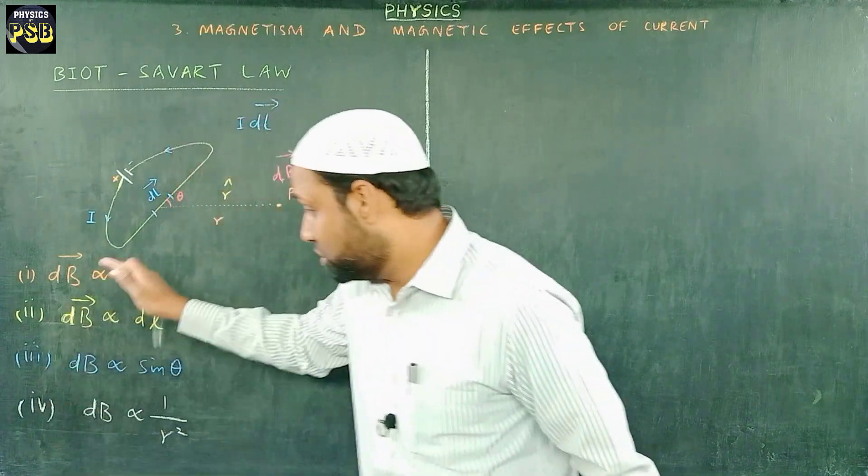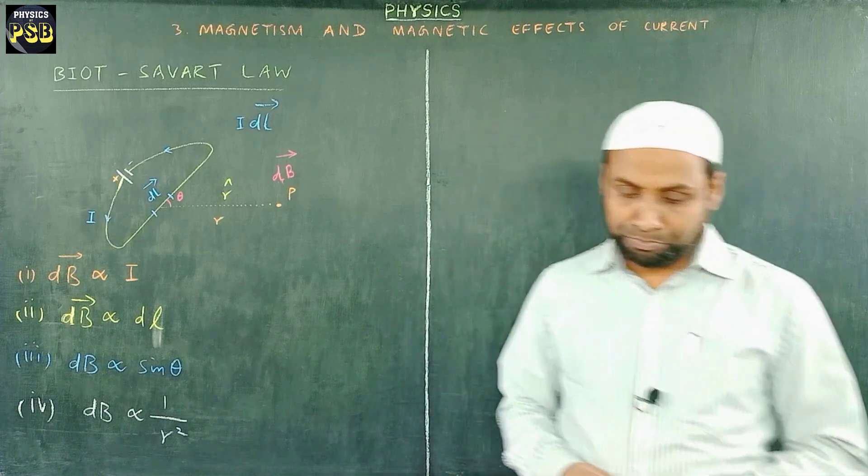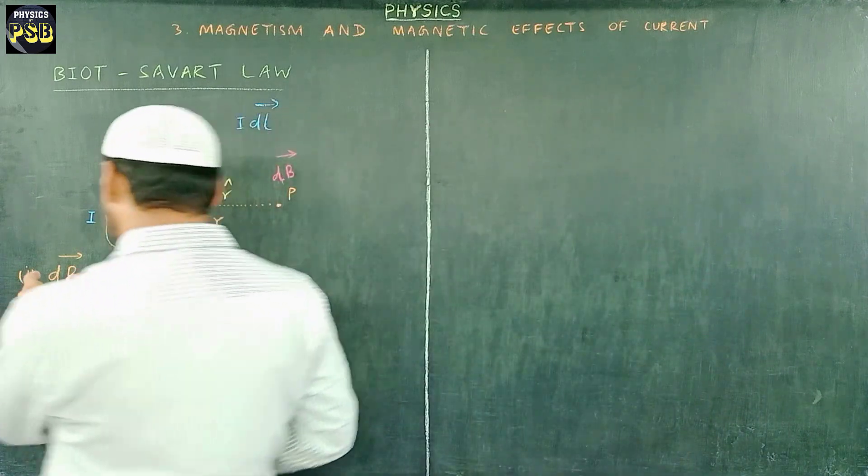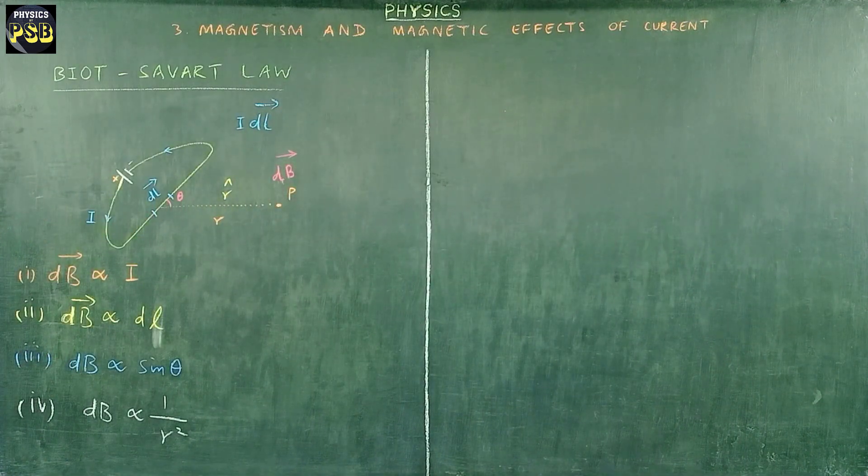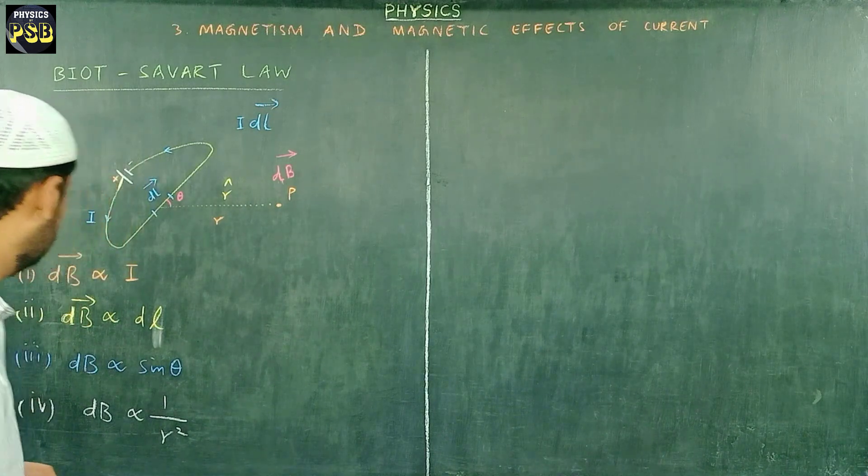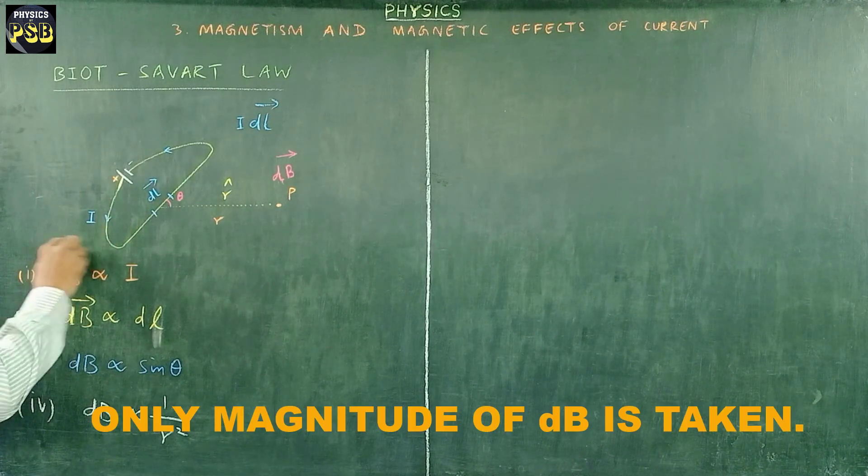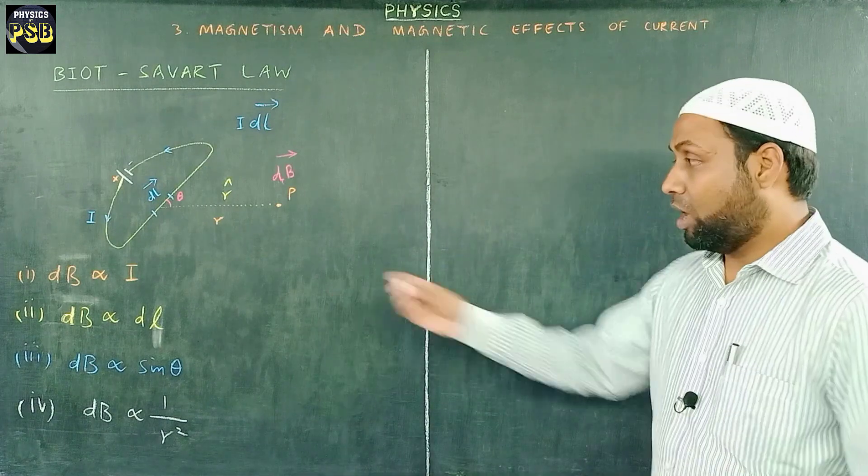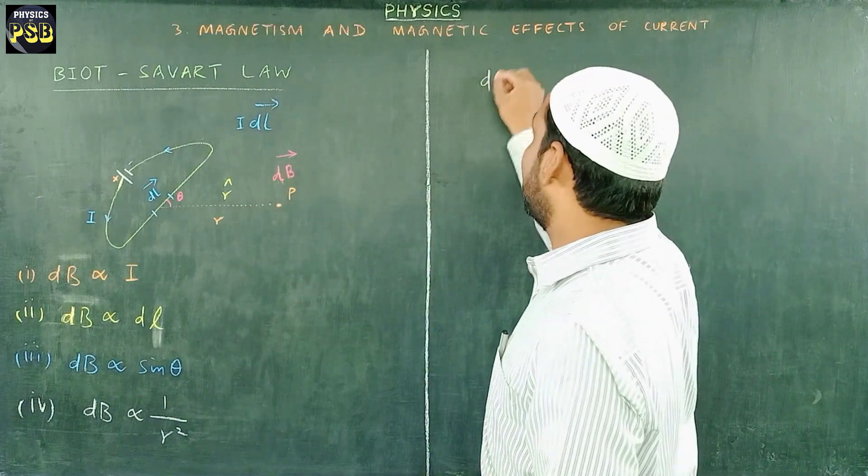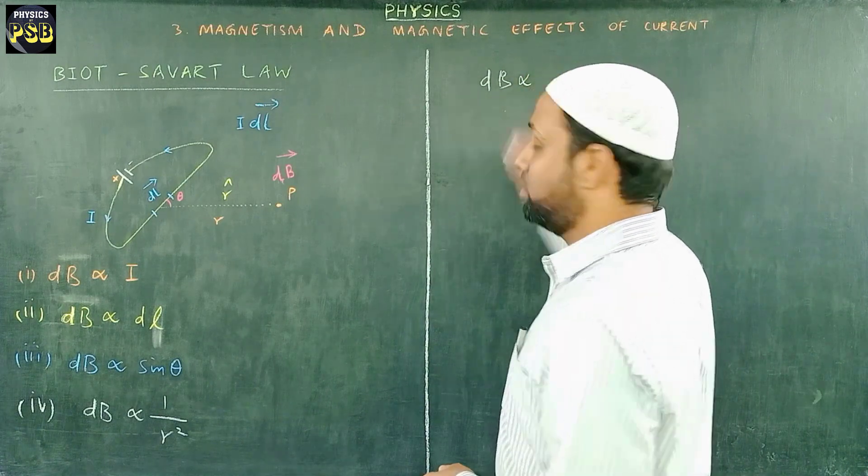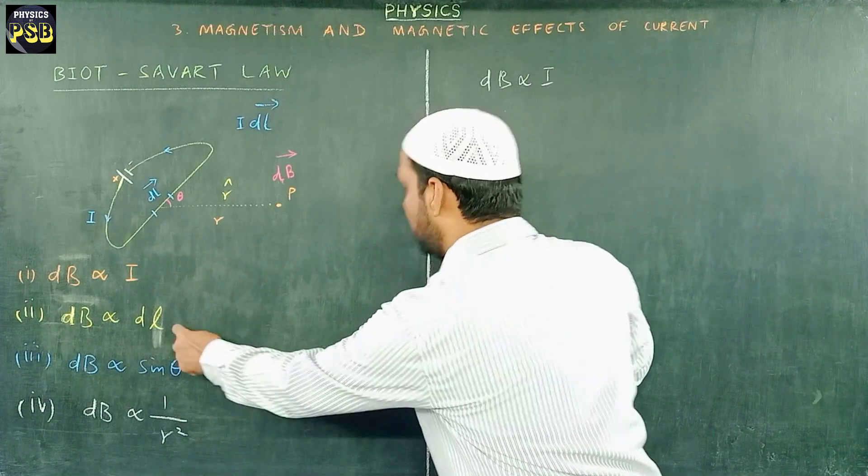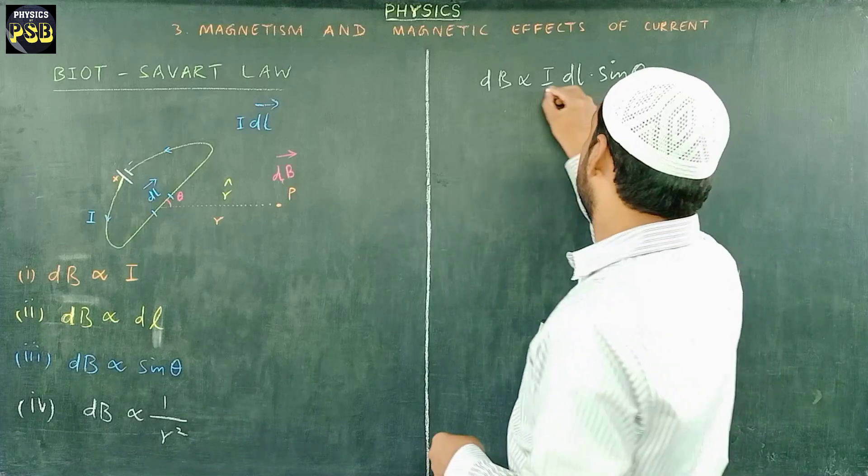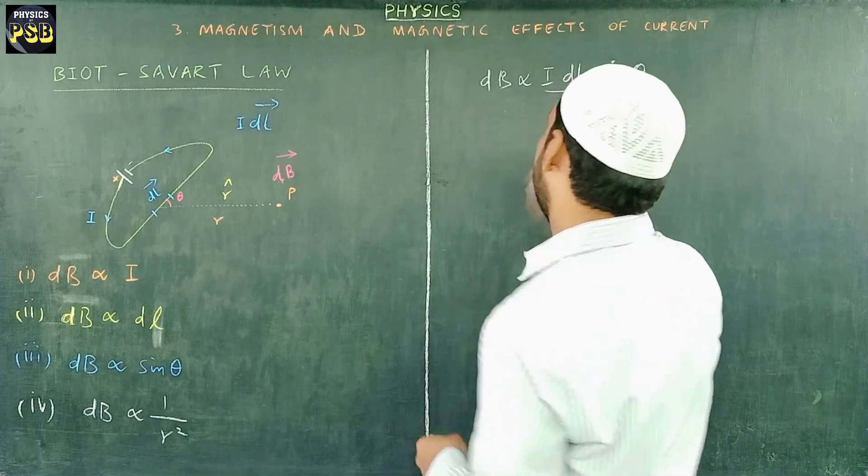Now if you look at all these expressions you will find all of them have the same expression, the same term on the left hand side. So for my convenience I combine them all. Then what do I get? dB is directly proportional to I dl sine theta over r square.